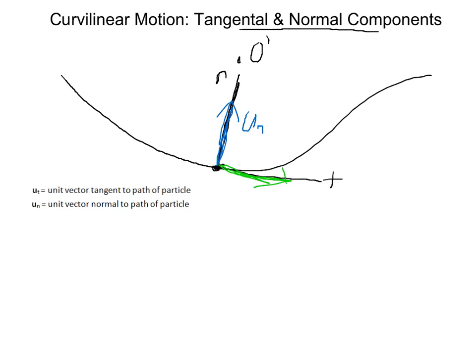If you split up this path into little segments, each segment could be formed from the arc of an associated circle. Each segment has its own arc and therefore its own center of curvature. To the center of curvature, we have the radius of curvature, rho.